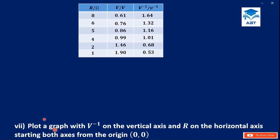Let's try this example too. We are going to plot a graph with V inverse on the vertical axis and R on the horizontal axis. The values of V inverse are all decimals, and the values of R are all whole numbers. Let's see how we can plot this on the graph and find the slope.